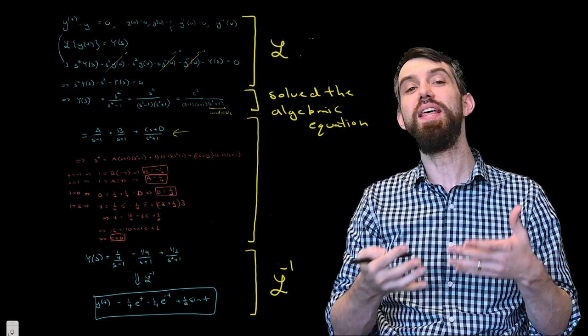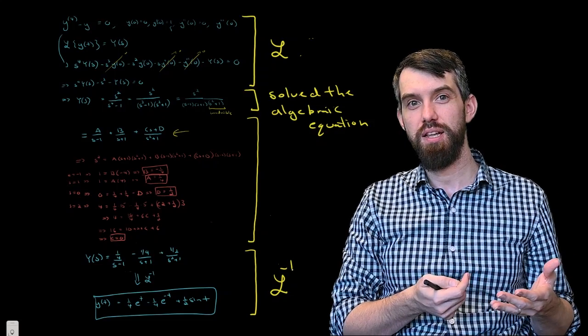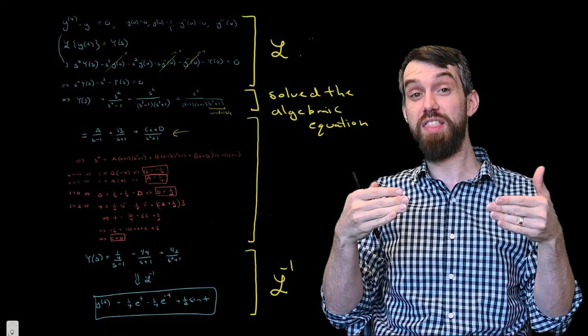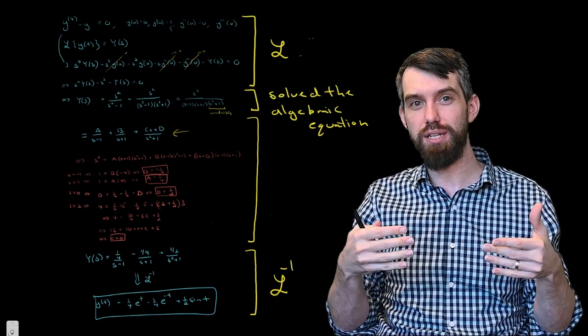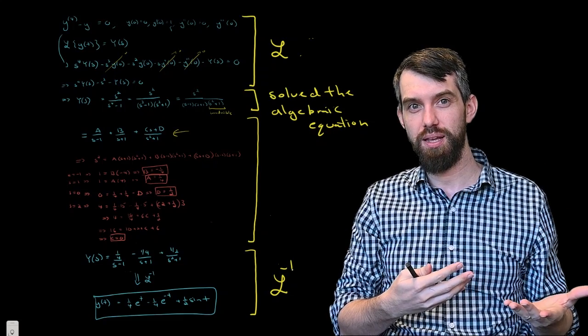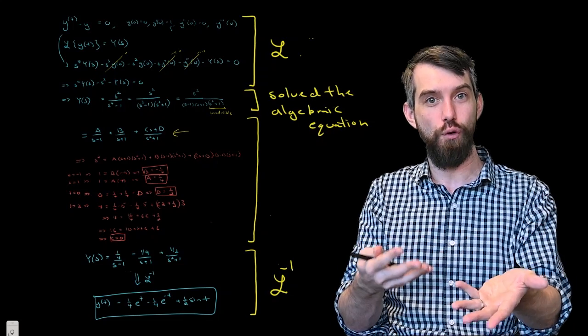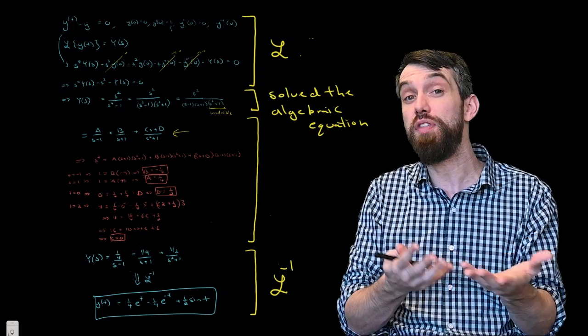So zooming out here, I see that I have actually four stages. The first stage is where I took a differential equation and converted it by the application of the Laplace transform to an algebraic equation. And then I took that algebraic equation in the second phase and solved for y as a function of s. I solved the algebraic equation.